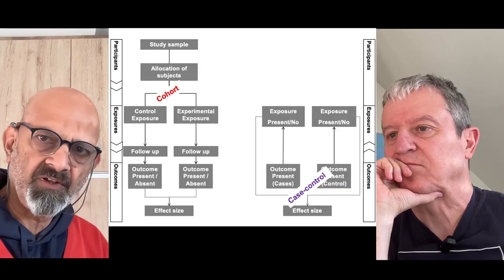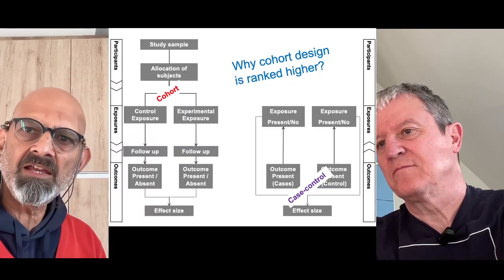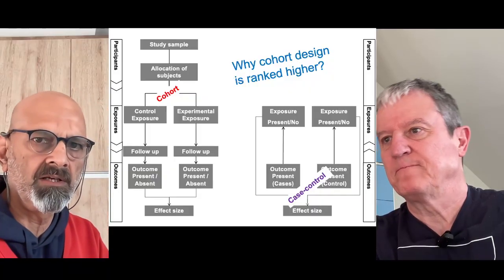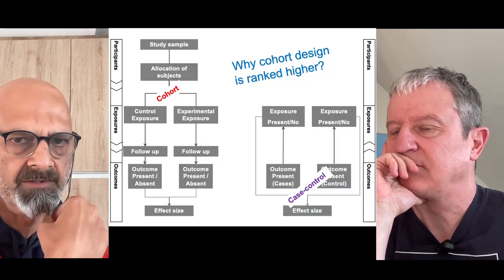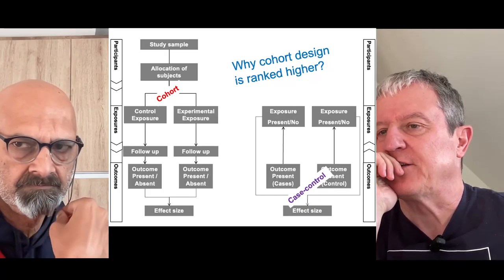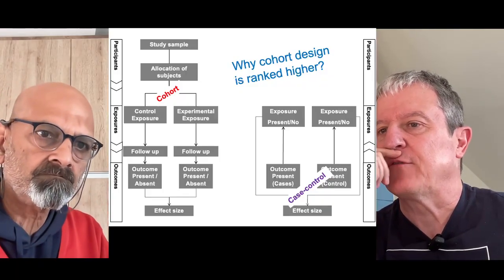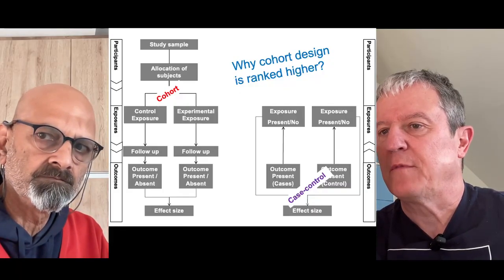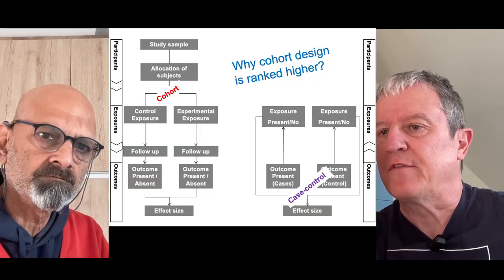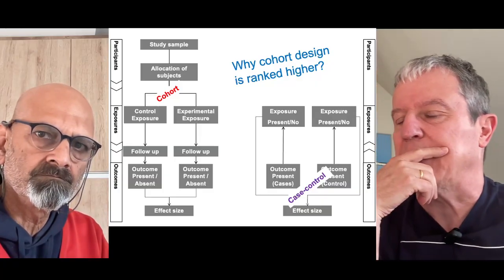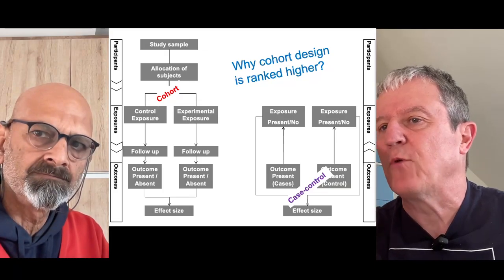I'm going to ask Professor Zamora to explain why cohort design is ranked higher in the evidence-based medicine hierarchy. The ranking depends mainly on how certain we are about an association — if it is real or not — the association between exposure and the outcome. With cohort studies, we have a couple of elements that make this design powerful. The first one is that when we select a sample, we are sure that the participants do not have the outcome; they are free of the outcome.